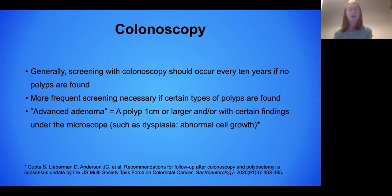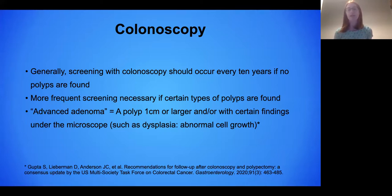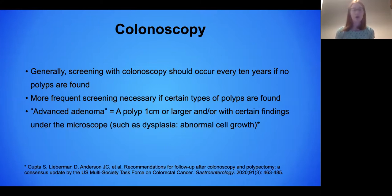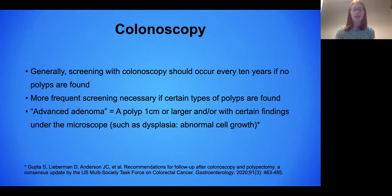Colonoscopy is the one-step screening method for colon cancer. If no polyps are found, the general recommendation is that colonoscopy should occur every 10 years. If polyps are found, depending on the number and type, your doctor may recommend more frequent screening. An advanced adenoma is a polyp that's a centimeter or greater and has certain findings under the microscope such as dysplasia or abnormal cell growth — that could prompt closer follow-up and potentially family needing to get screened earlier.